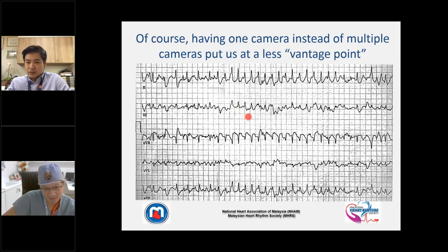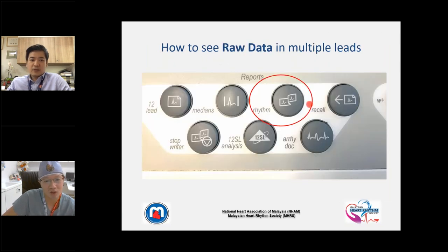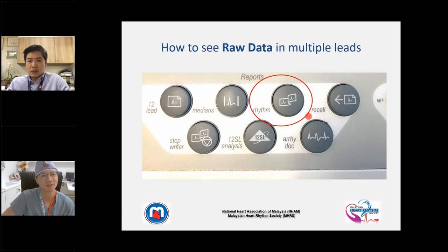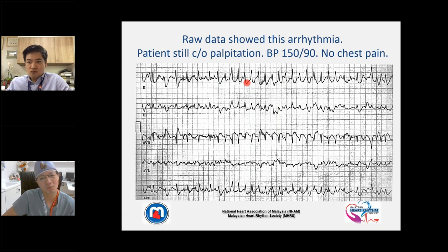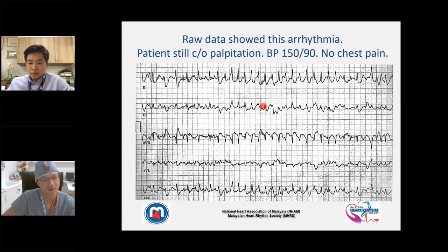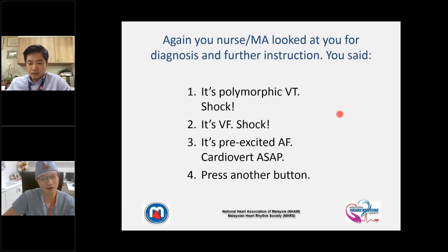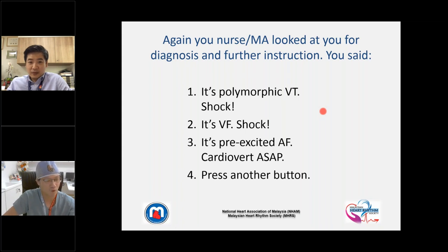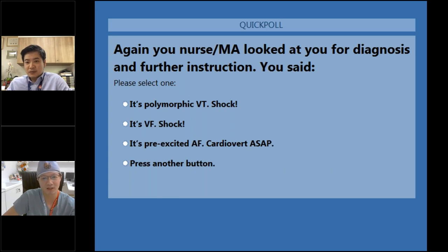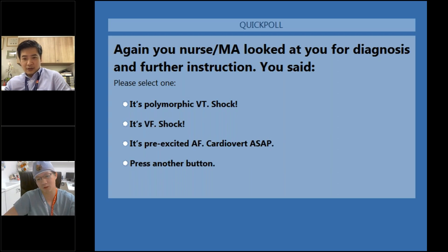The rhythm button switches you from synthesized data to raw data, which is essential for rhythm diagnosis. On the GE machine, the rhythm button means you want raw data, not synthesized. Coming back to the tracing — this is the arrhythmia the patient is having. She is complaining of escalating palpitations, BP 150 over 90, still no chest pain. What is your diagnosis, and what would you do?